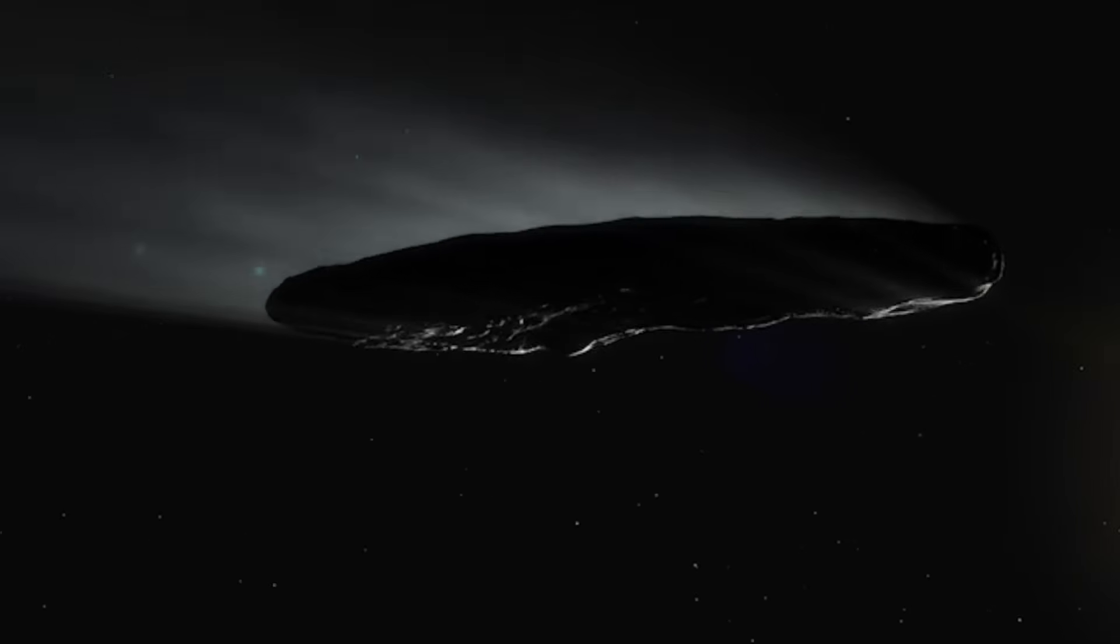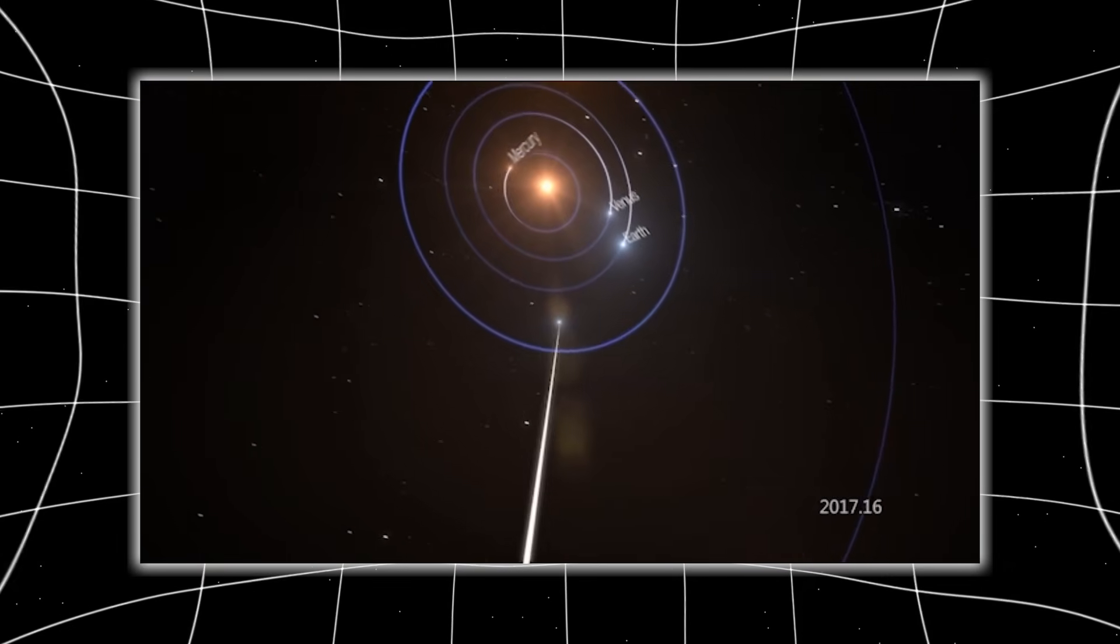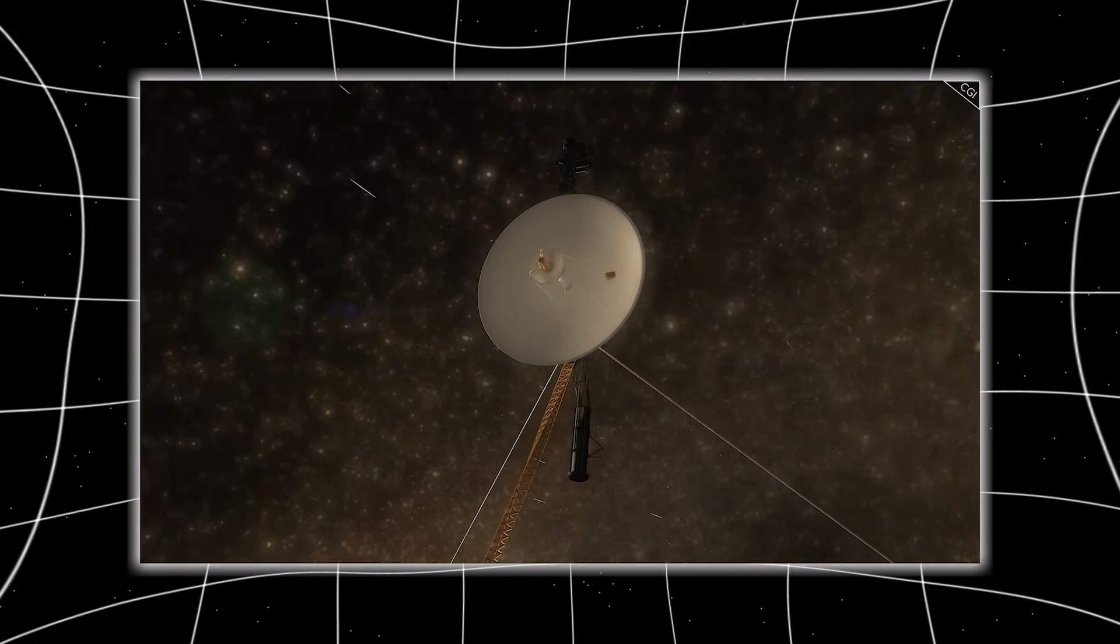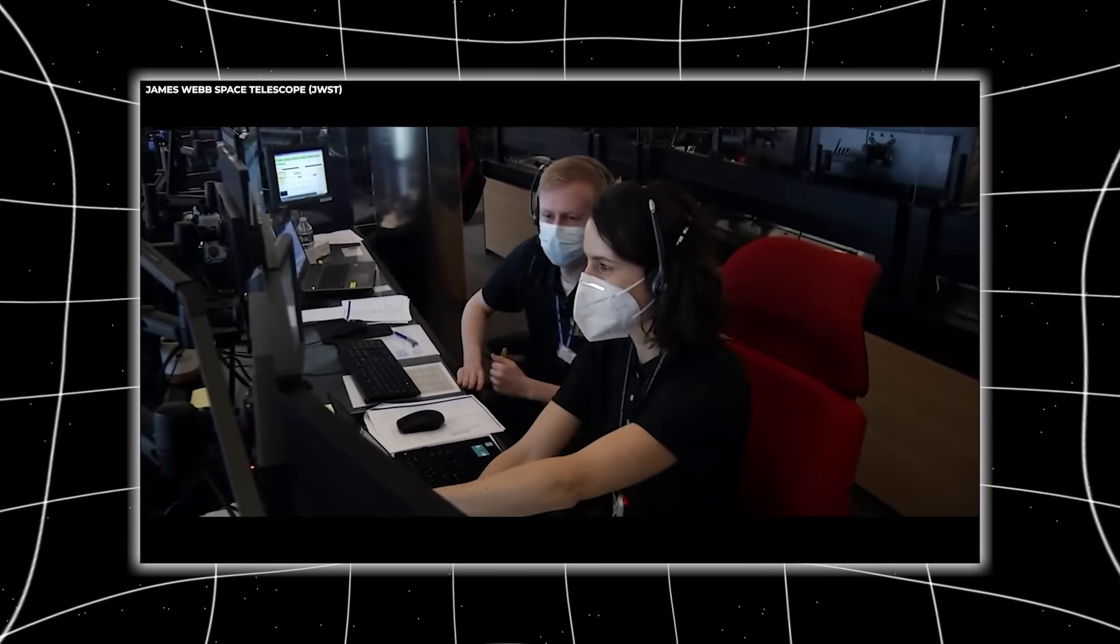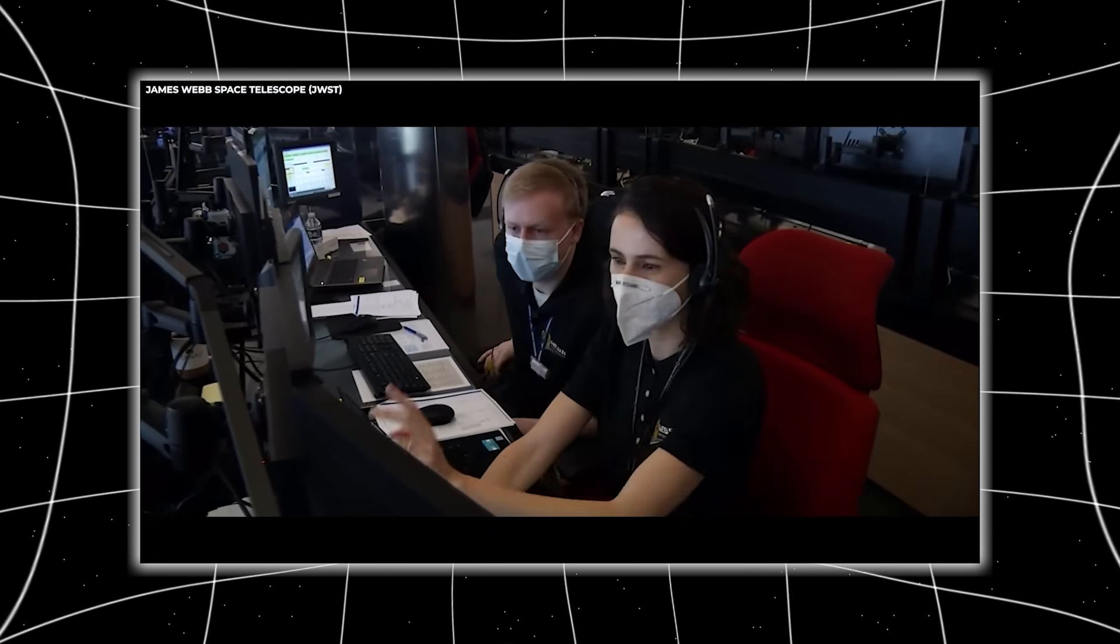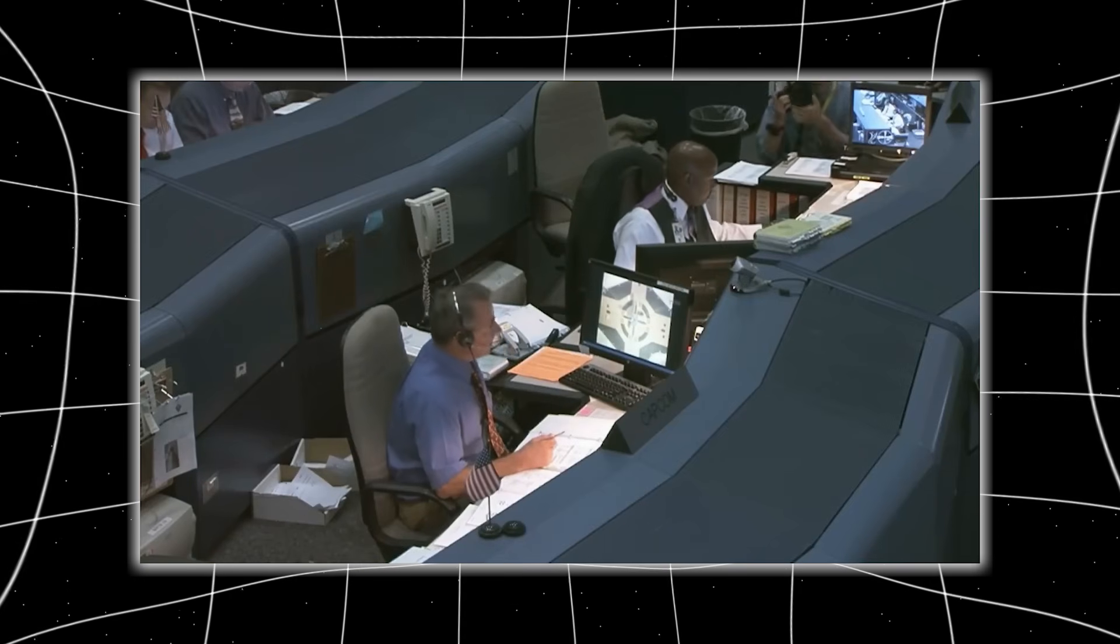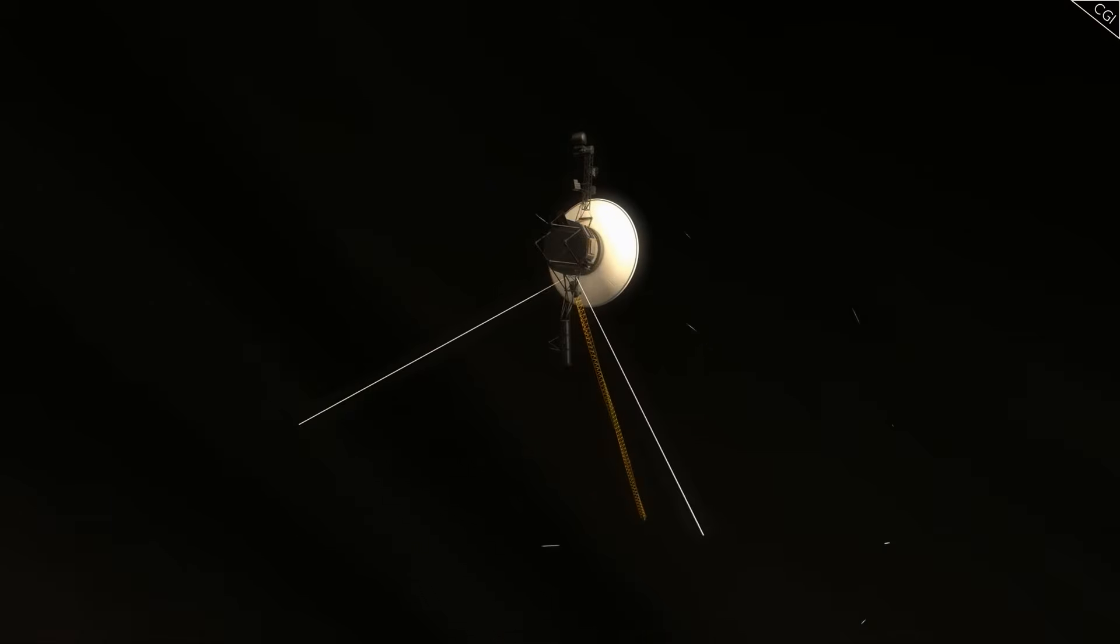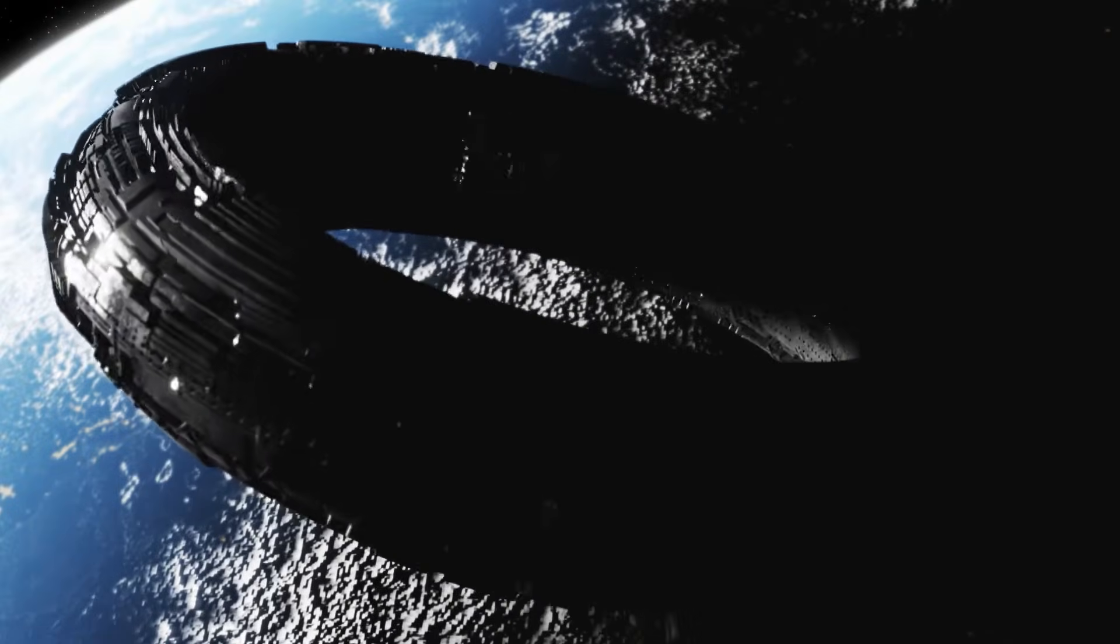What's even stranger is that this realignment pointed not at 3I Atlas's last known position, but toward its projected future path, weeks ahead. It was as if Voyager was predicting where Atlas would go next, like a chess player anticipating a move before it happens. Engineers at JPL claimed the shift was due to a minor miscommunication with the deep space network, but leaked internal memos suggested something more unnerving. The probe had changed direction before commands were sent. This leaves only two possibilities. Either Voyager is malfunctioning in a highly coordinated way, or something out there is controlling it remotely.